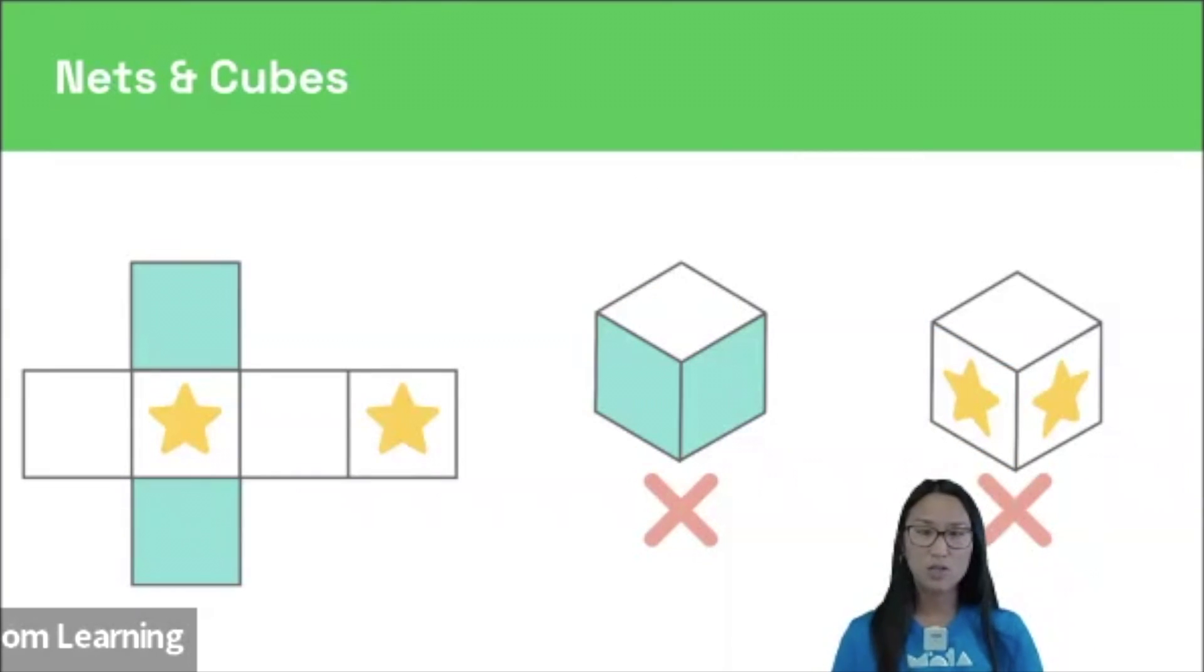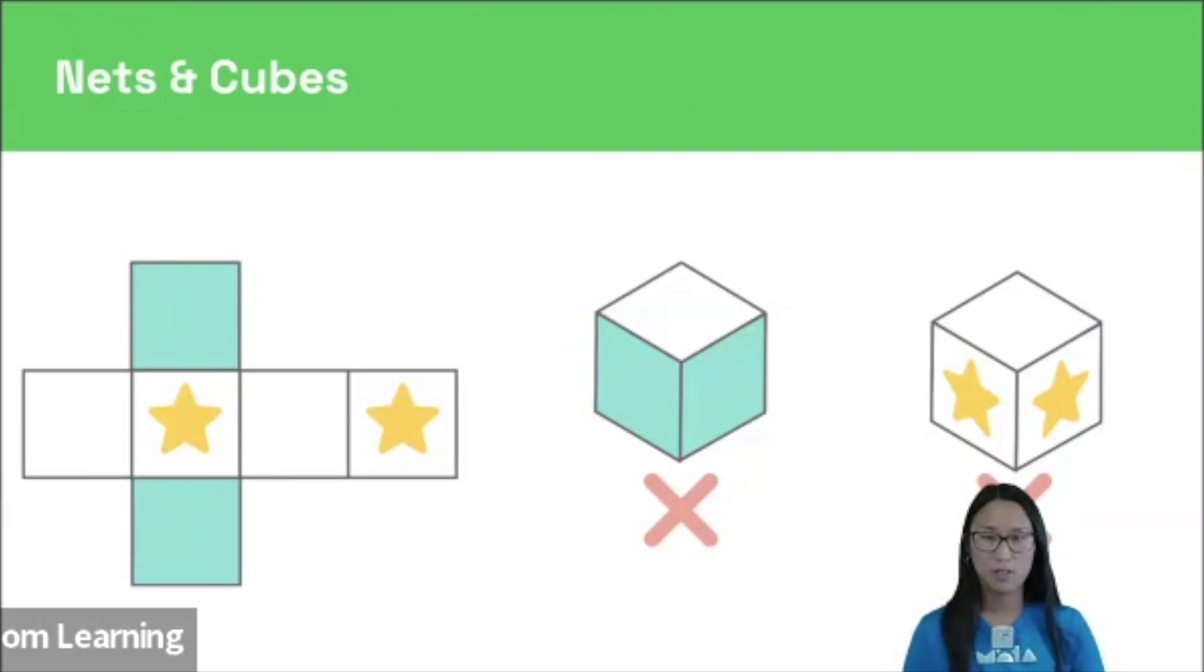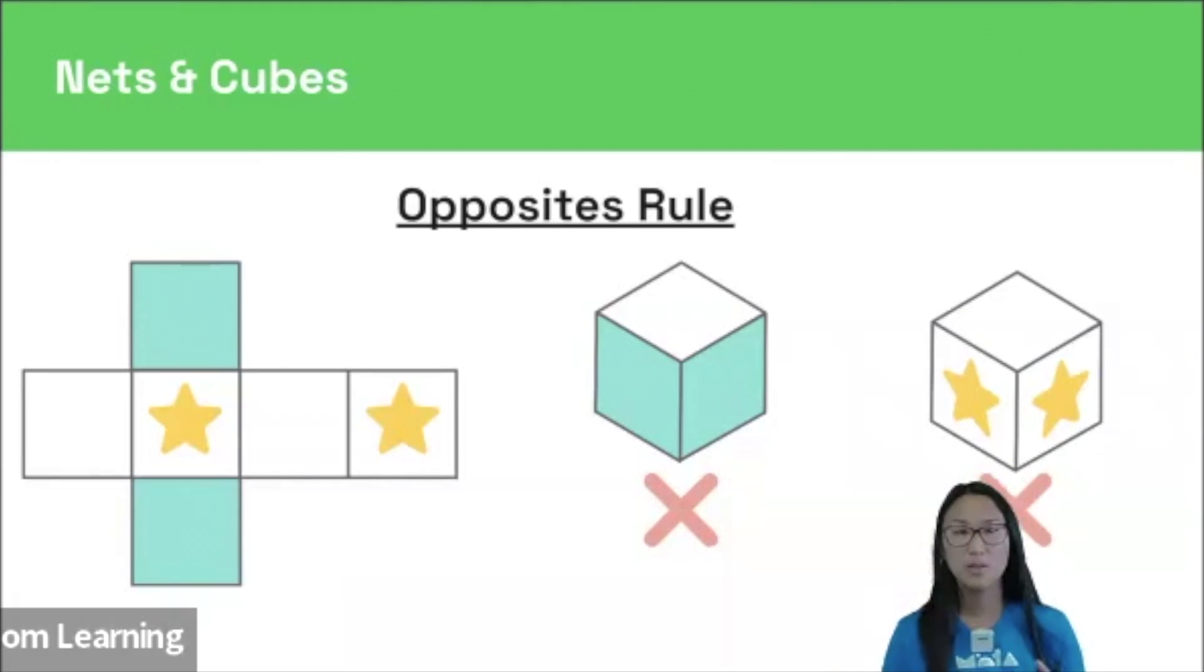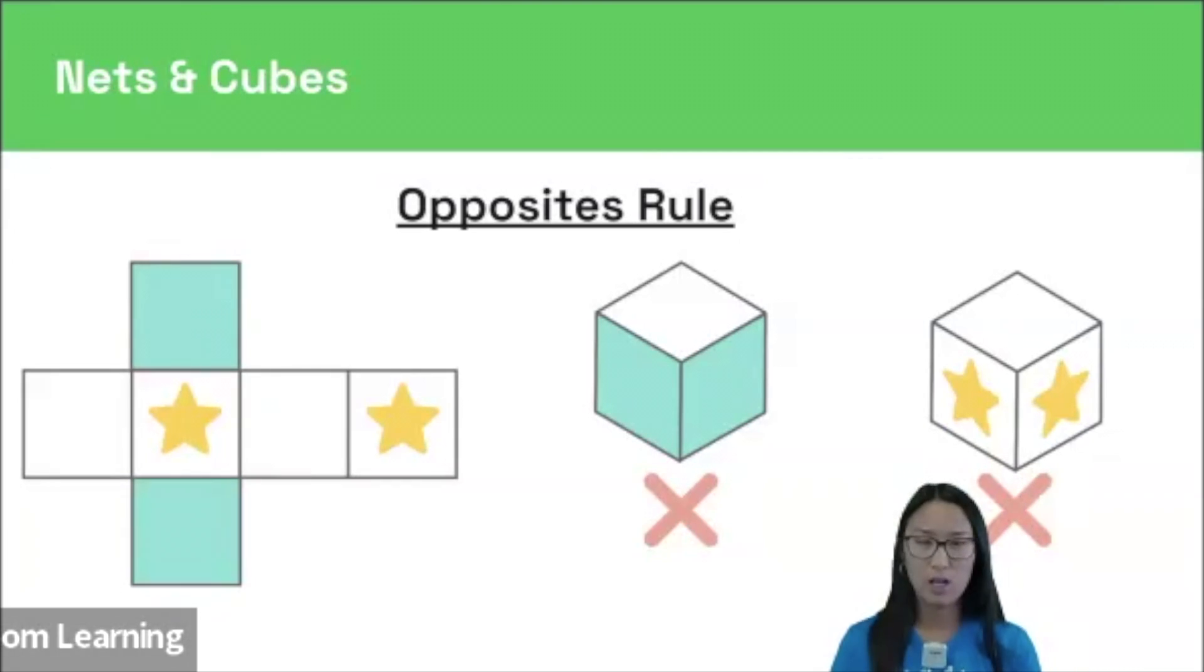Our next rule is the opposites rule. So some cubes can't be made from a given net because their faces break the opposites rule.